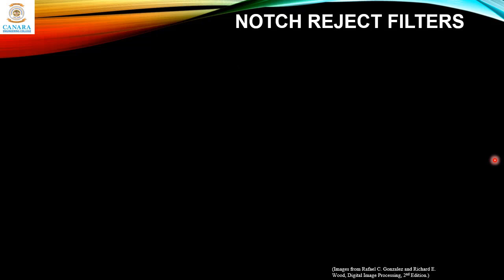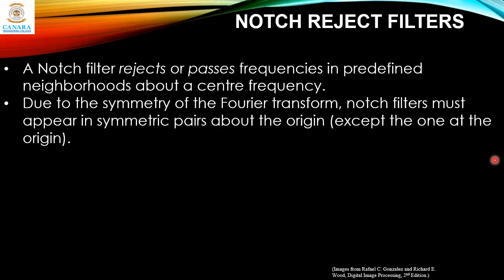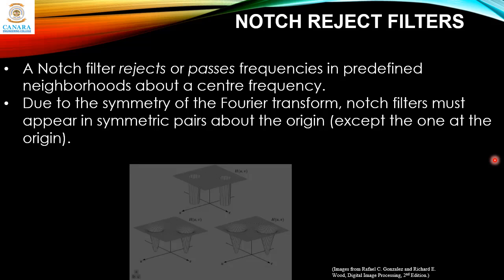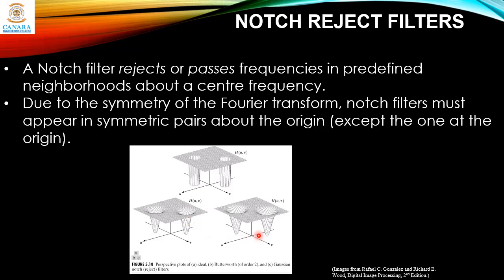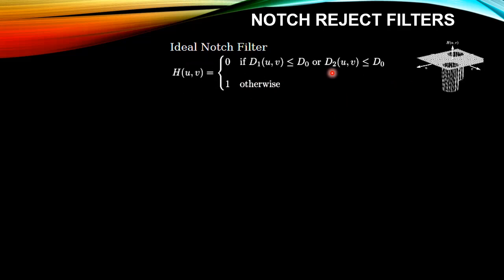The next type is the notch reject filter. A notch filter rejects or passes frequencies in a predefined neighborhood about a center frequency. Due to the symmetry of the Fourier transform, notch filters must appear in symmetric pairs about the origin, except for the one at the origin. This is the 3D plot for notch reject filters — you can see they appear in symmetric pairs: the ideal case, the Butterworth, and the Gaussian notch reject filters. The output is zero for a predefined neighborhood given by the defining condition.